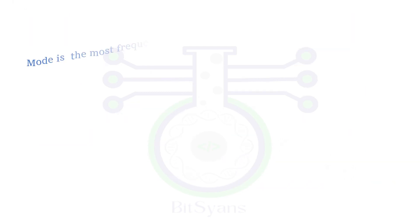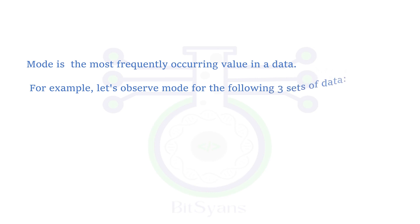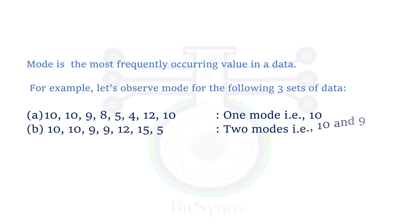Now, if we talk about mode, it is the most frequently occurring value in a data. It means that for a given data, mode may or may not exist. For example, let's observe mode for the following three sets of data. In this case, the most frequently occurring value in the case 1, A, is 10. Now, if we compare to B, it is 10 and 9 because they are occurring twice. In case of C, there is no repetition of the value. I hope you could understand.